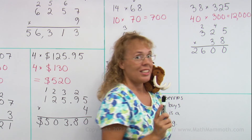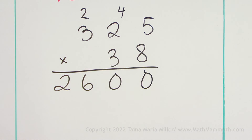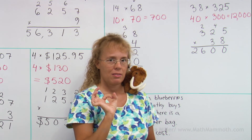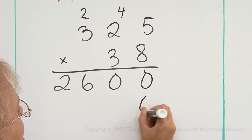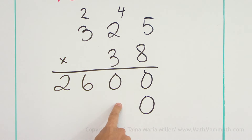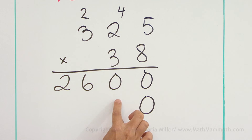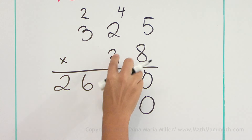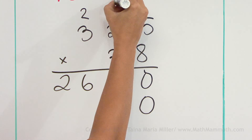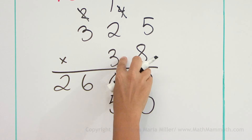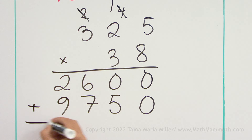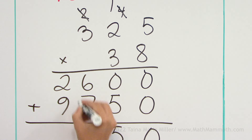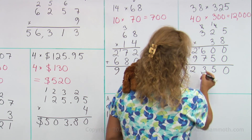Next, something important — I need to stress this again. You're going to multiply 30 times that number, which means the answer will end in a zero. Because when you multiply something by 30, by any whole 10, it will end in a zero. So I'm going to start by putting a zero here, and then multiply 3 times 325 from there. So 3 times 5 is 15, 3 times 2 is 6 plus 1 is 7, and 3 times 3 is 9. And now add to get 12,350.